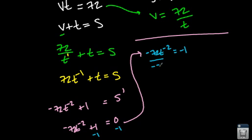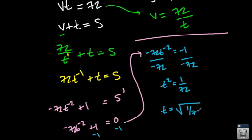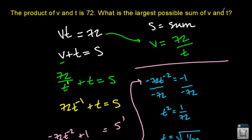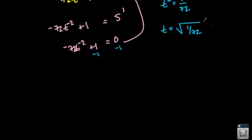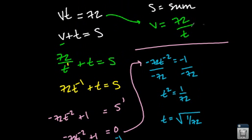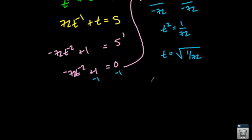I'm going to divide by negative 72. So t to the negative 2 is equal to 1 over 72. So t is equal to the square root of 1 over 72. Since we're looking for what is the largest possible sum of v and t, the largest possible sum has to be positive, so we're not interested in the negative value of t. Now that we have that, we're going to come back to our original equation, which is vt equals 72, and we're going to put this in for t.